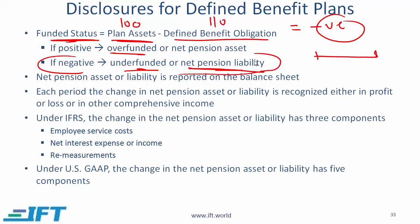The net pension asset or liability is reported on the balance sheet. If the pension liability increases over a period, that increase is an expense. That increase needs to be shown either on the income statement as a loss or expense, or in OCI. When the pension obligation increases, some part is shown in the income statement and some part in OCI.